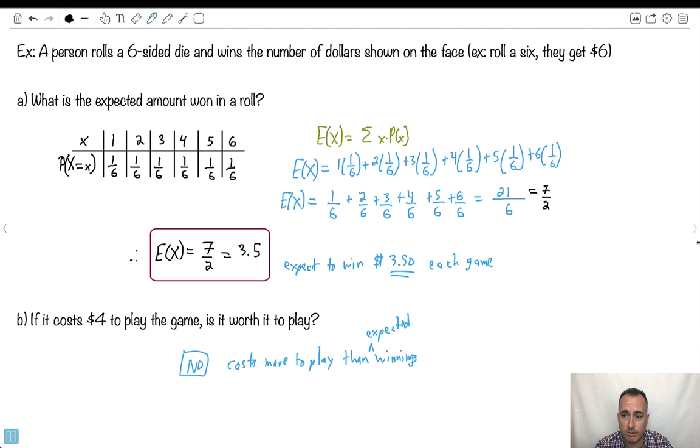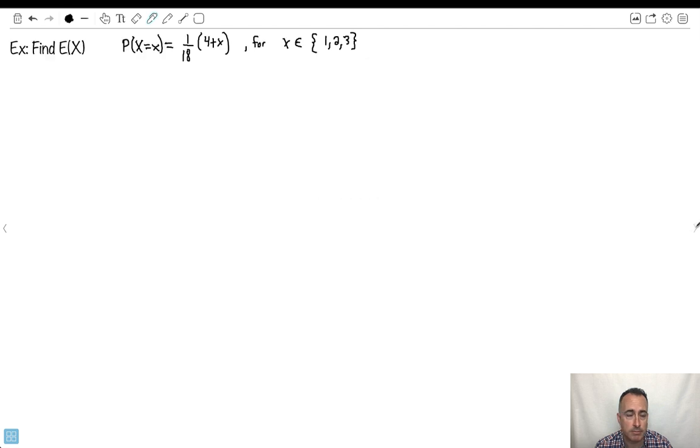So, we can do another example. So here's another example here. We have the expected value. We want to do the expected value of this, P of X equals X. So capital X equals lowercase X of 1 over 18, 4 plus X, or X is an element of 1, 2, and 3. This looks complicated, sure. But let's just break it down here. Let's figure out what's the expected value. Well, it's equal to the sum of every X times every probability of getting that X. So all we have to do then is just make a table. Maybe I'll make a table now.